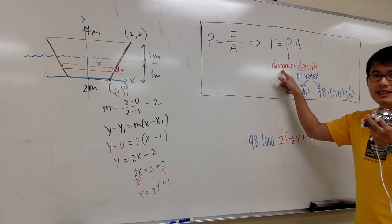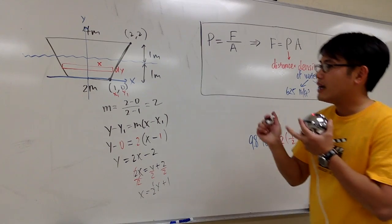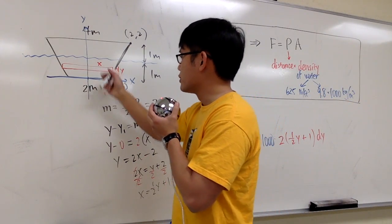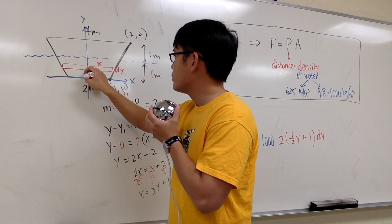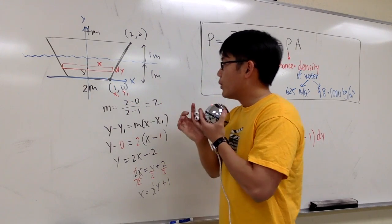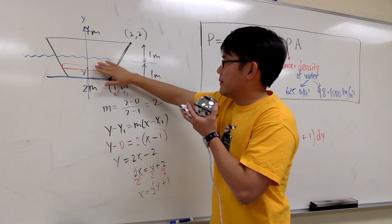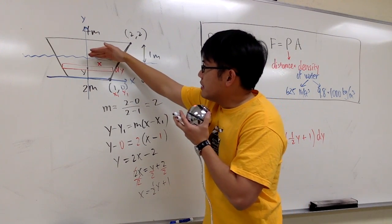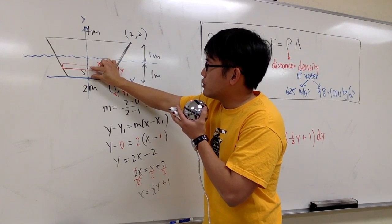The last thing is the distance. How far down we are underneath the water. So this rectangle is right here, and I will just label from here to here will be the y. How far down are we underneath the water? This is the surface of the water. This much is y.